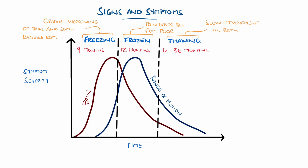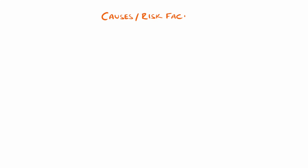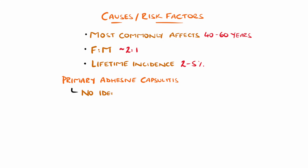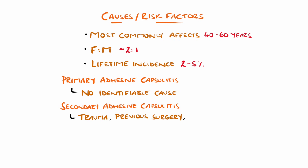After the thawing stage, the range of motion will gradually return to normal, though more recently this has been challenged as some people do experience persisting functional limitations. It is important to assess the impact on day-to-day functioning, as it can result in limitations in activities of daily living such as getting dressed, or limiting the person's ability to work or sleep. It most commonly affects people between the ages of 40 and 60, and is more common in females than males by around 2 to 1. The lifetime incidence is around 2 to 5%. In cases where there is no identifiable cause, it is termed primary adhesive capsulitis, while if there is a contributing factor like trauma, previous shoulder surgery, diabetes, or thyroid disorders, it is termed secondary adhesive capsulitis.